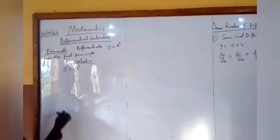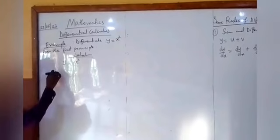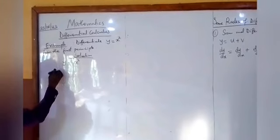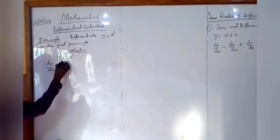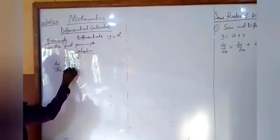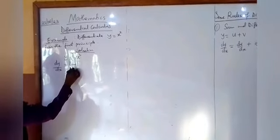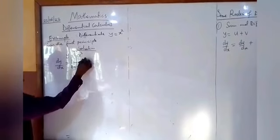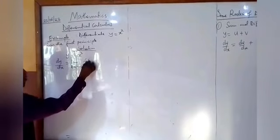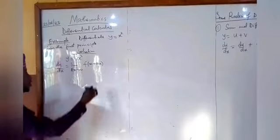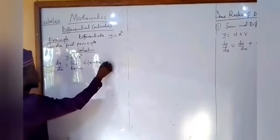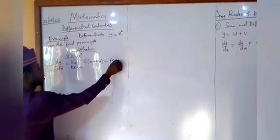From the first principle, our differential coefficient dy/dx is given as: dy/dx equals the limit as δx tends to zero of f(x + δx) minus f(x), all over δx.